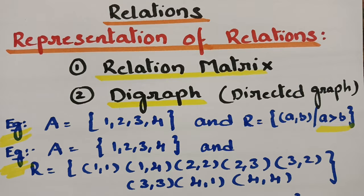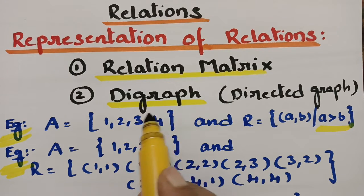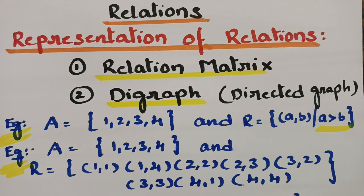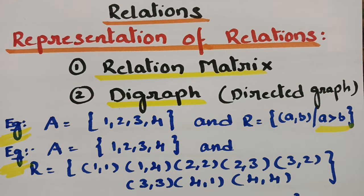Today's topic is on representation of relations, and this is related to MFCS, DMS, and DMGD. How to represent a relation? There are two types: the first one is a relation matrix, and the second one is a digraph, which is nothing but the directed graph. Whatever might be the relation, we can represent it in two notations — the first one is through matrix notation and the next one is through graphical representation.